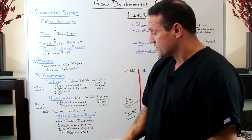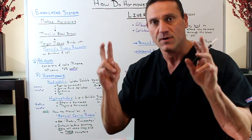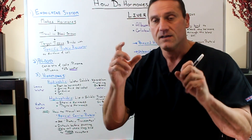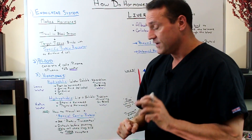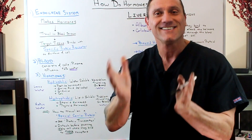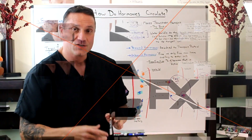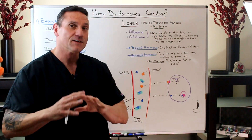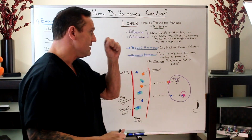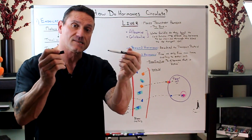They attach to a protein transporter and detach — they get out of the bus — before passing into the cell to hit their specific receptor. This is where the liver comes in, a dynamic organ. The liver makes the transport proteins; they make the bus that these hormones get carried on.